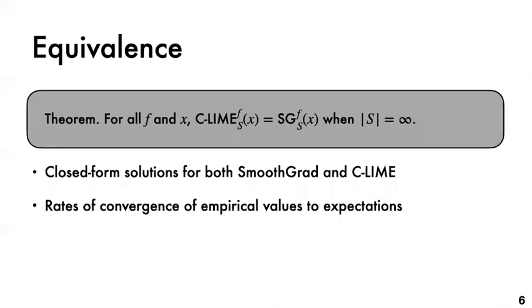As we increase the size of the sample s, SmoothGrad and CLIME converge to their expected value. So as our first main result, we derive explicit closed-form expressions for the expected output values of SmoothGrad and CLIME. And further, we show that SmoothGrad and CLIME have exactly the same expected value. We also derive finite sample complexity bounds for the number of samples required for both SmoothGrad and CLIME to converge to their expected outputs.